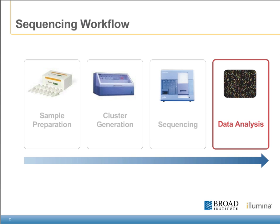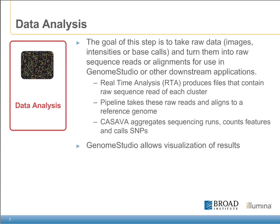Although the analysis of sequencing data can be extensive, we'll focus today on the primary aspects of data analysis from the GA to downstream analysis using the pipeline software package. The general goal at the data analysis step is to take the raw data in the form of images or intensities and turn them into sequencing reads, later used for alignment or other downstream applications.